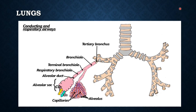Further branching of the bronchioles leads to the terminal bronchioles, which are less than 2 mm in diameter. The part of the lung distal to the terminal bronchiole is called the acinus. It is roughly spherical with a diameter of around 7 mm. An acinus is composed of your respiratory bronchioles, alveolar ducts, and alveolar sacs. Remember that.